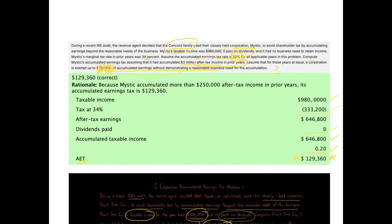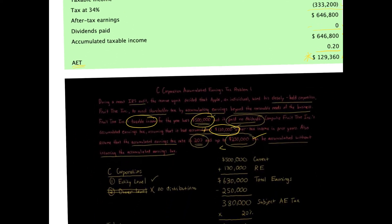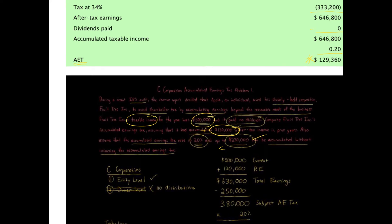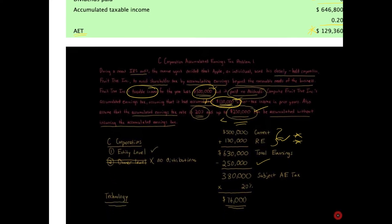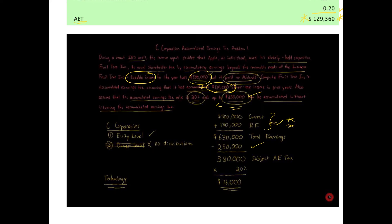The biggest difference between the two problems is that Mystic's prior year amount of $3,000,000 is greater than $250,000, so the exemption is ignored. For Fruit Tree, the $130,000 prior year amount is smaller than the $250,000 exemption, so we add the amounts together and then subtract the $250,000. The key takeaway is that the $250,000 exemption is for the lifetime of the business — not each year — and once it's been used up in prior years, it's irrelevant to the current calculation. That's what makes these problems tricky.